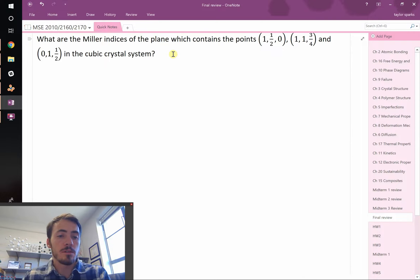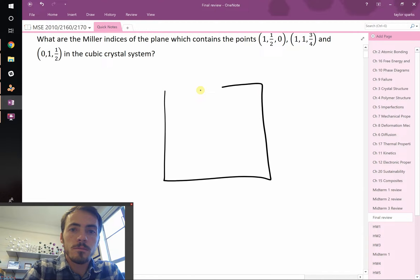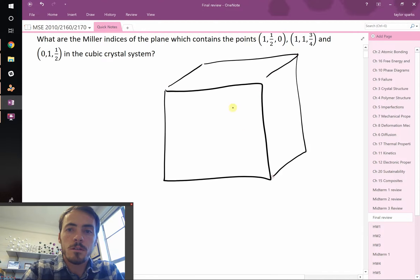This type of question can be solved in two ways. The way that you would probably think to do it first is to just draw the cubic unit cell, label these points on there, draw the plane, and see where it intersects the x, y, and z-axis, and then it's just like labeling Miller indices like anything else.